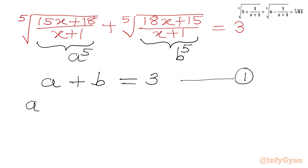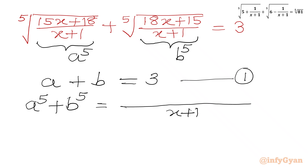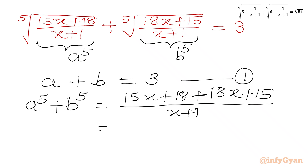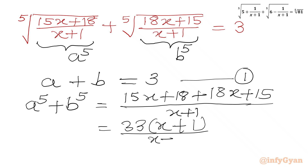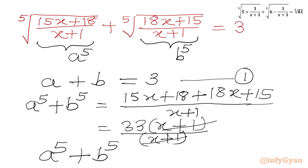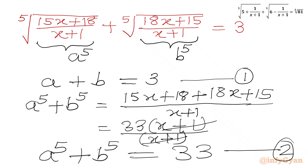Now I will find the value of the expression a^5 + b^5. The denominator is the same, so we write the common denominator x + 1 and simply add the numerators: 15x + 18 plus 18x + 15. This gives us 33(x + 1) over (x + 1). We can cancel (x + 1) from numerator and denominator. So our second equation is a^5 + b^5 = 33.